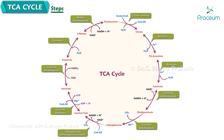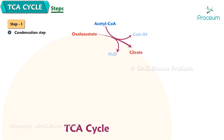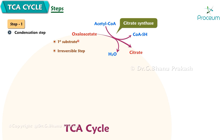Steps of the citric acid cycle. Step 1: Condensation step. Acetyl coenzyme A joins oxaloacetate to form citrate. The enzyme is citrate synthase. Oxaloacetate is the first substrate of the citric acid cycle, and this is an irreversible step.